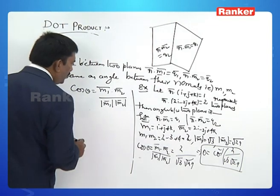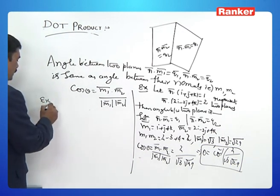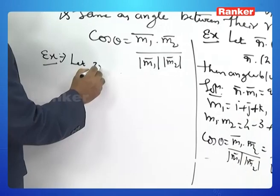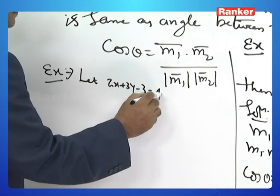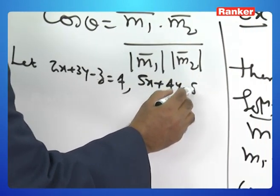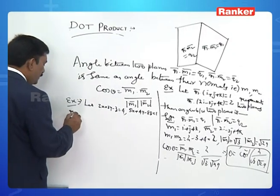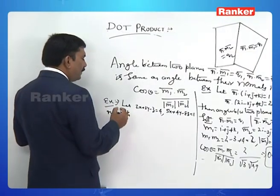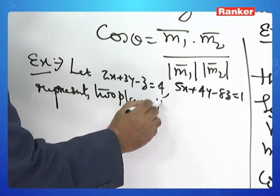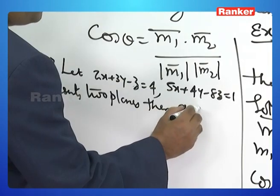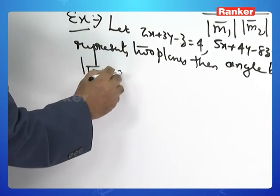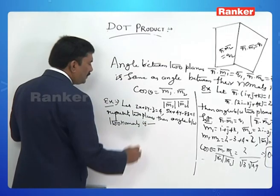Now another example with planes in Cartesian form: 2x plus 3y minus z equals 4 and 5x plus 4y minus 8z equals 1 represent two planes. Find the angle between the two normals. The angle between two planes is the same as the angle between their normals — there is no separate formula. The same formula applies.